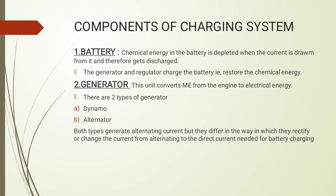The chemical energy in the battery is depleted when current is drawn from it, and therefore it gets discharged. The first component is the battery. The second one is the generator. The generator converts mechanical energy from the engine into electrical energy. There are two types: dynamo and alternator.